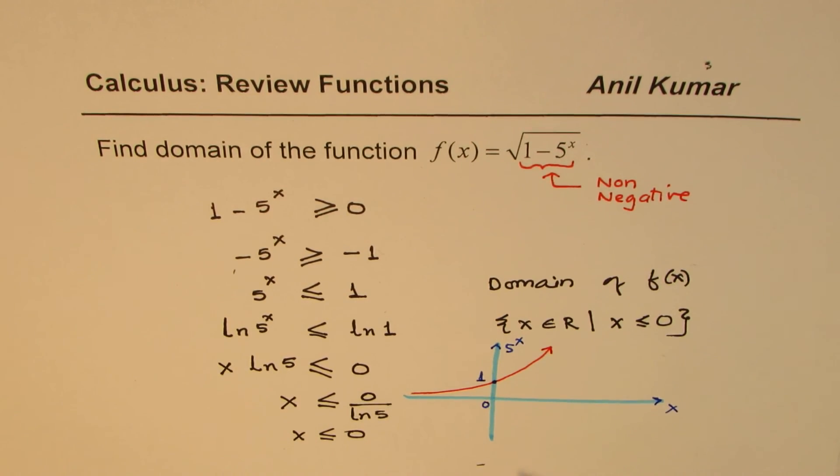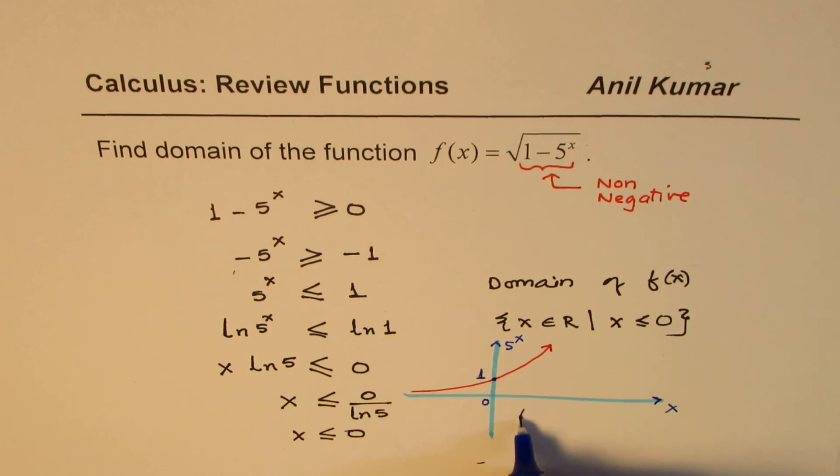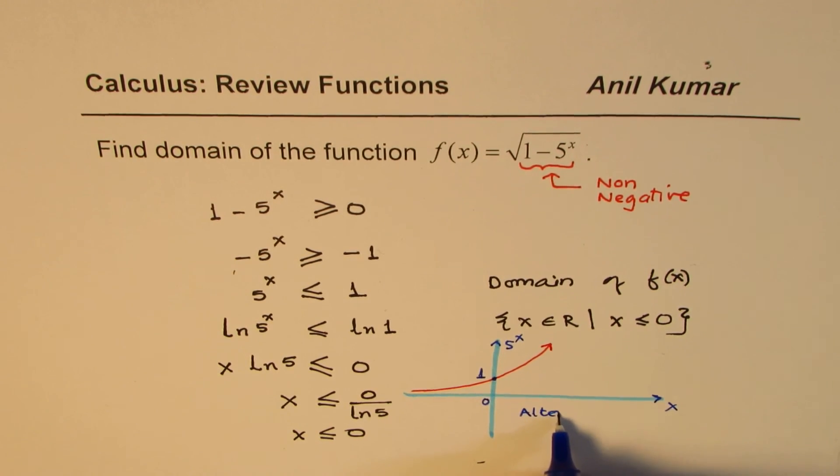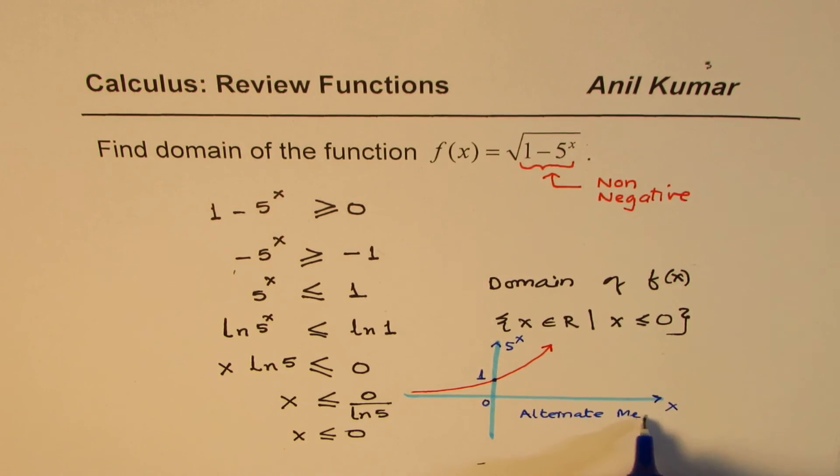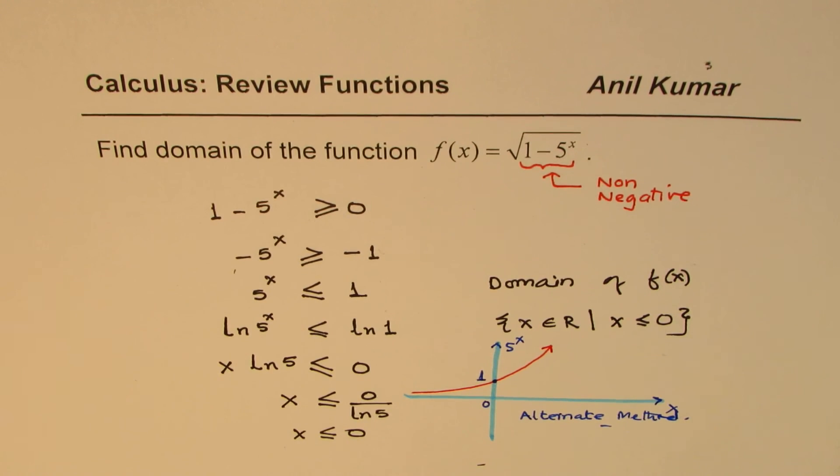At 0 it is 1, so that is permitted. 1 - 1 is 0, so you could get the result from the graph also. That's a good alternative, right? So let me write down alternate method. You could do it by understanding your exponential functions. I hope that helps. Thank you and all the best.